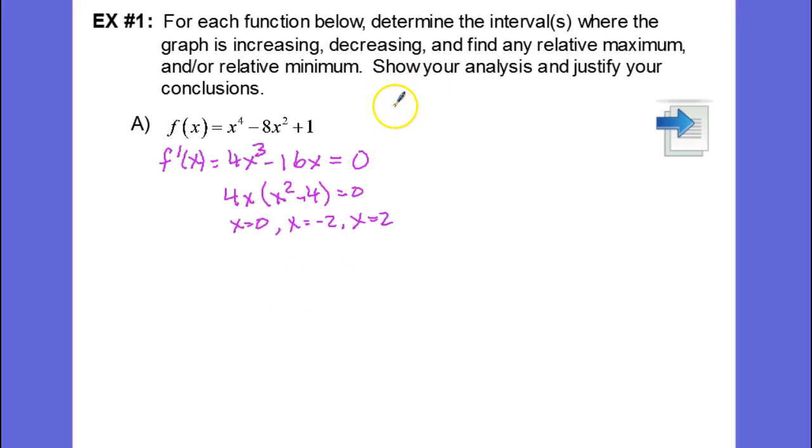Now I'm going to come off to the side and write down my mnemonic for function and derivative relationships. We have f, f prime, and f double prime. So we'll do plus minus, up, down, concave up, concave down.